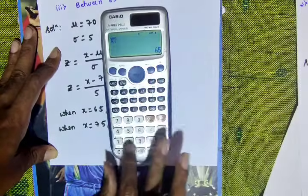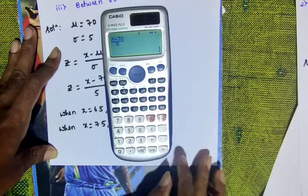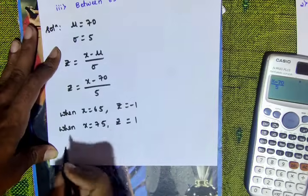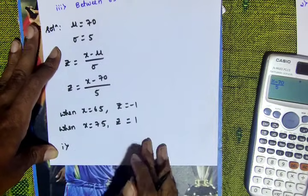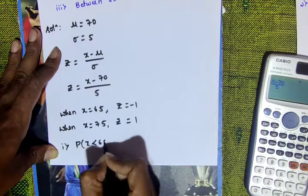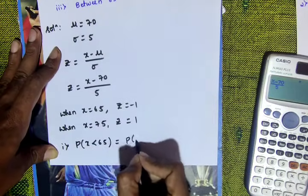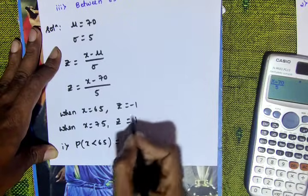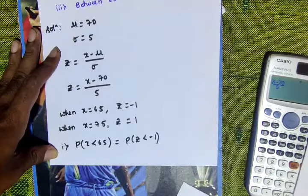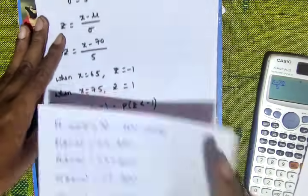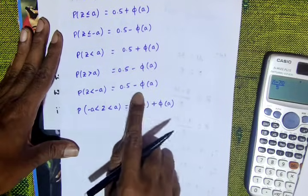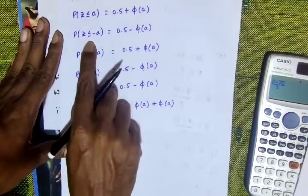First question: find the number of students who scored less than 65. P(X less than 65) equals P(Z less than minus 1). Using the formula: P(Z less than minus a) equals 0.5 minus phi of a, so P(Z less than minus 1) equals 0.5 minus phi of 1.